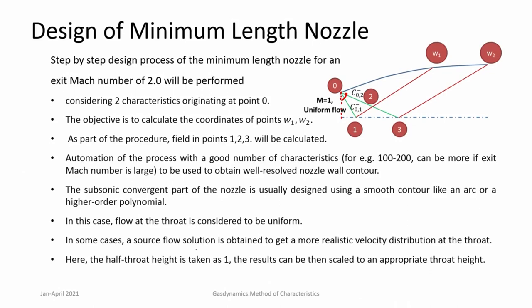If this needs to be achieved correctly and a smooth profile needs to be obtained, we need a large number of waves — you may need to take hundreds of waves in order to get a smooth profile. But here for a classroom case, we will just take two characteristics to see the procedure so that you become familiar with it. If somebody is applying this in their work, they need to actually write a MOC code — a simple code — in order to do this calculation for many many waves.